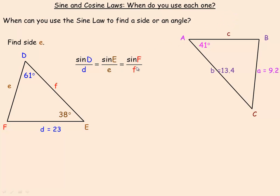There's also a sine F over F here, but I don't know angle F and I don't know side F, so I don't need that. Now it could be that in the beginning you don't know angle D but instead you know angle F.